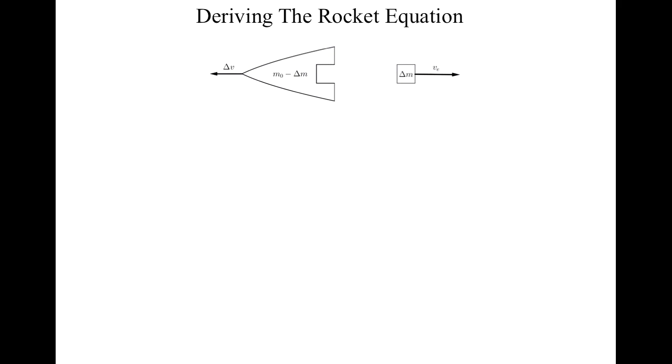The ship's velocity will have changed by an amount delta V. We will now consider the linear momentum of each object. Momentum is calculated by taking the mass and multiplying it by the velocity. So the momentum of our ship would be M0 minus delta M times delta V. Similarly, the momentum of the ejected mass would be delta M times VE.